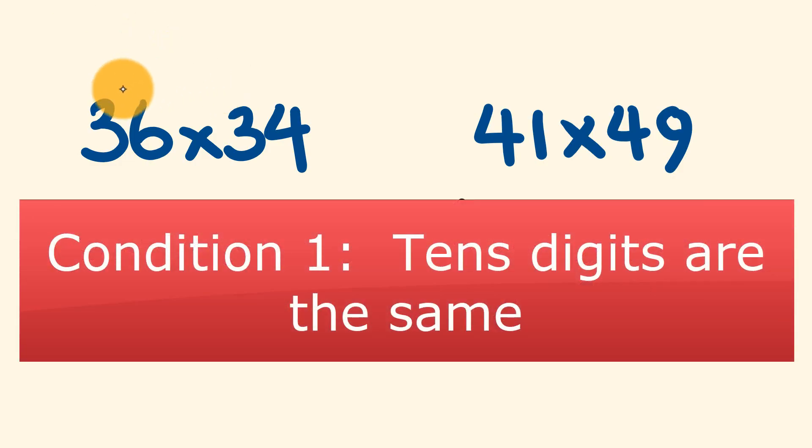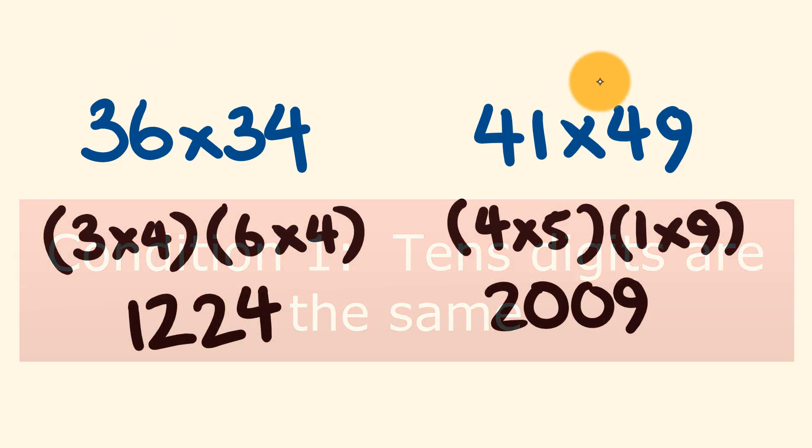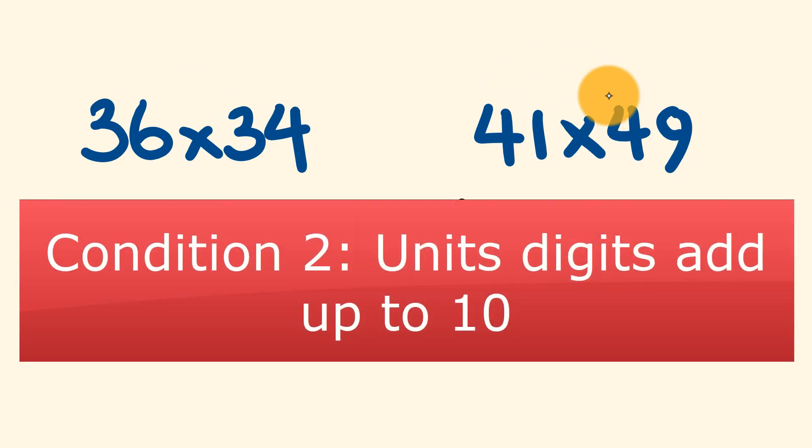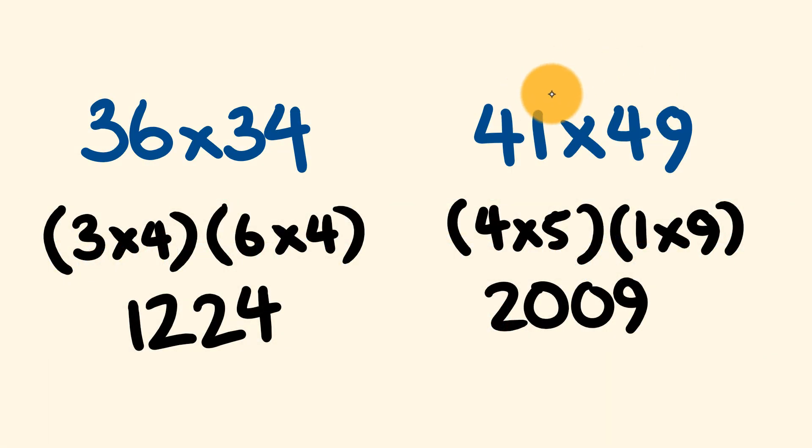First off, you're going to notice that the tens digits are the same. The second thing you may notice is that the units digits add up to 10. So in this case, we have 6 plus 4 add up to 10, and in this case, 1 plus 9 adds up to 10. So it has a fair degree of limitation, but once again, the real trick with mental math is using the most efficient trick where you can. So like I said, a series here.